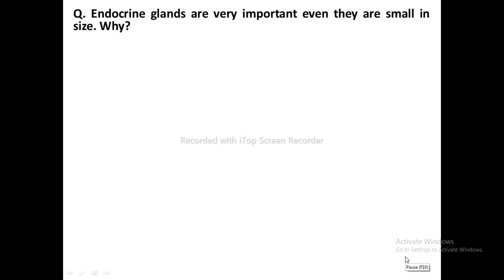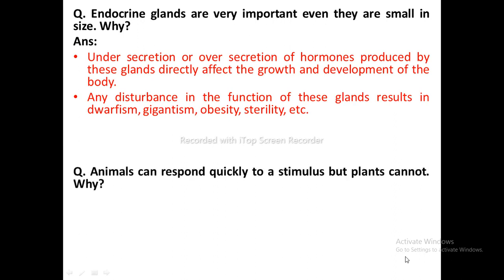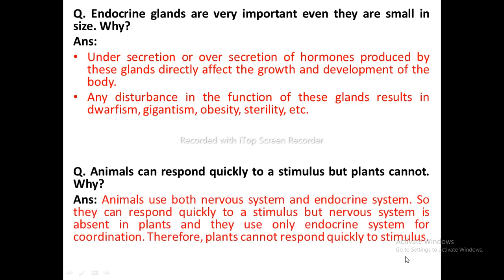Reasoning questions: Endocrine glands are very important even though they are small in size because under-secretion or over-secretion of hormones directly affects growth and development, resulting in dwarfism, gigantism, obesity, sterility, etc. Animals can respond quickly to a stimulus but plants cannot, because animals use both the nervous system and the endocrine system, whereas plants lack a nervous system and use only the endocrine system for coordination.